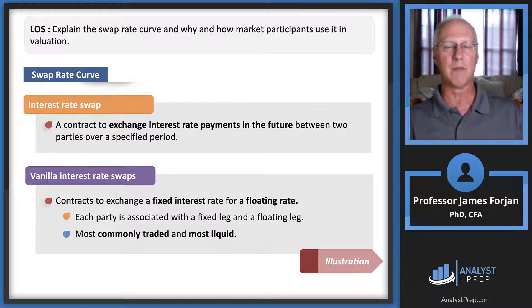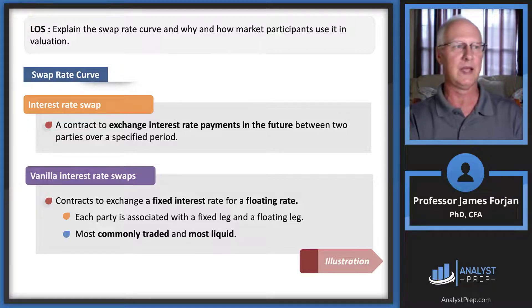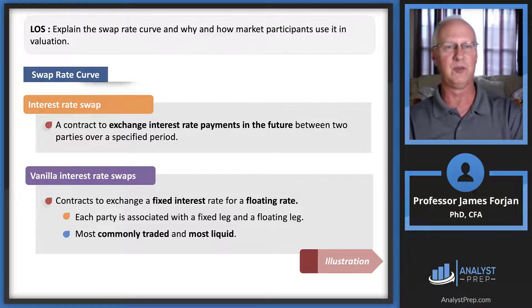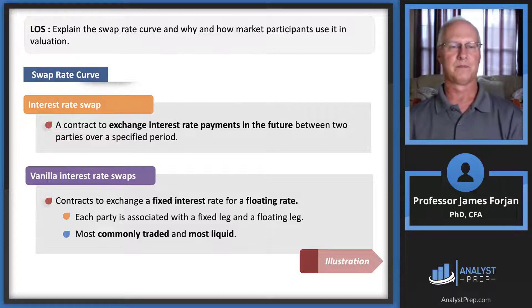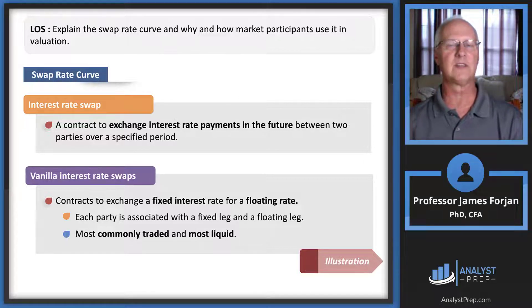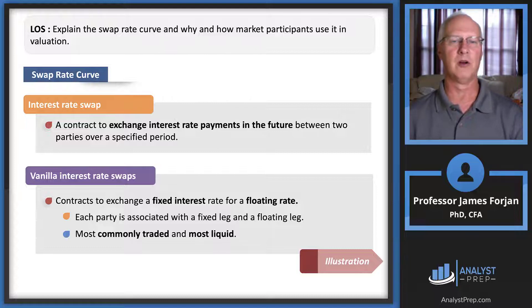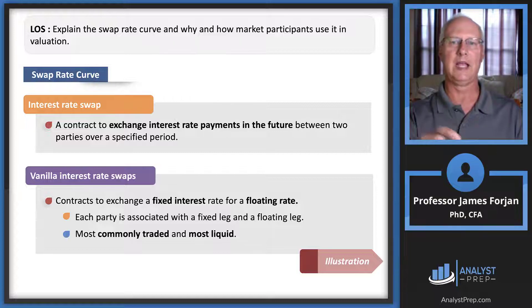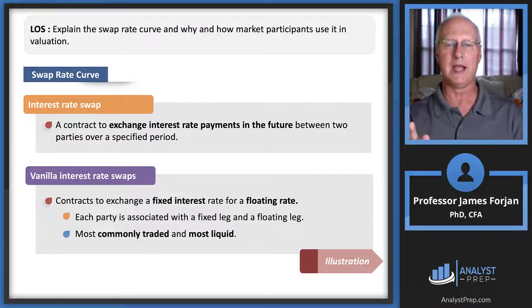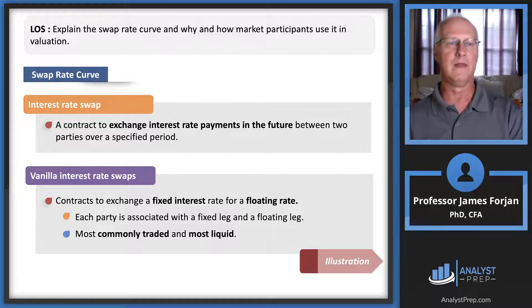In an interest rate swap, we swap fixed for floating cash flows. Your position either increases or decreases in value depending on whether interest rates go up or down. The plain vanilla interest rate swap exchanges a fixed interest rate for a floating rate and is the most commonly traded and most liquid type of swap.